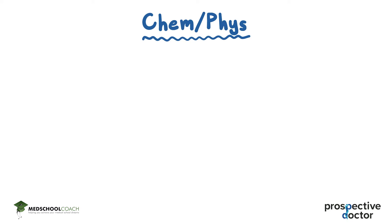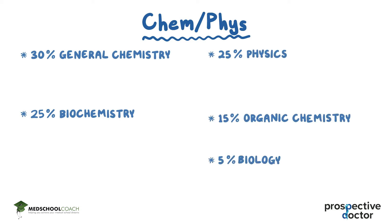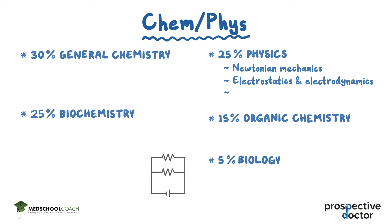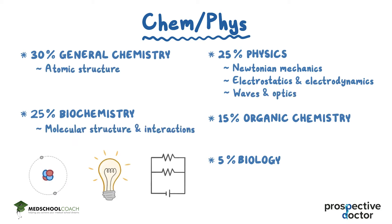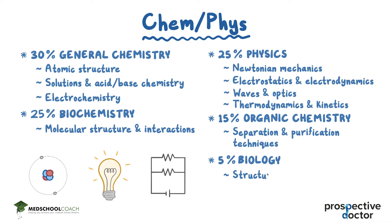The Chem-Phys section consists of 30% General Chemistry, 25% Biochemistry, 25% Physics, 15% Organic Chemistry, and 5% Biology. Topics in this section include Newtonian Mechanics, Electrostatics and Electrodynamics, Waves and Optics, Atomic Structure, Molecular Structure and Interactions, Solutions and Acid-Base Chemistry, Electrochemistry, Separation and Purification Techniques, Thermodynamics and Kinetics, and the Structure, Function, and Reactivity of Biologically Relevant Molecules.